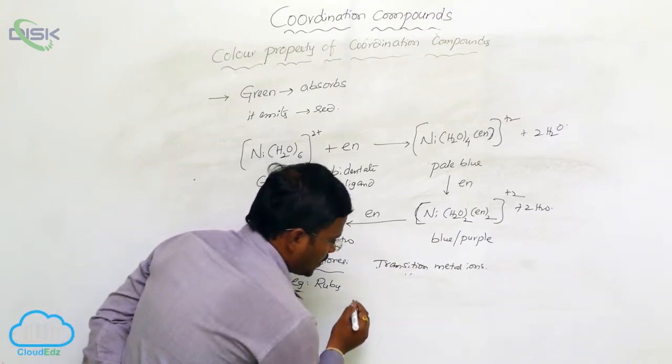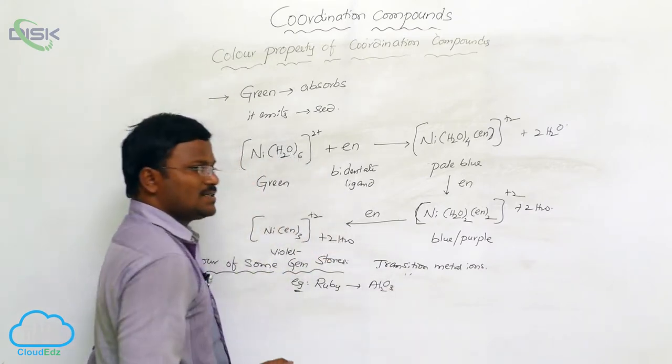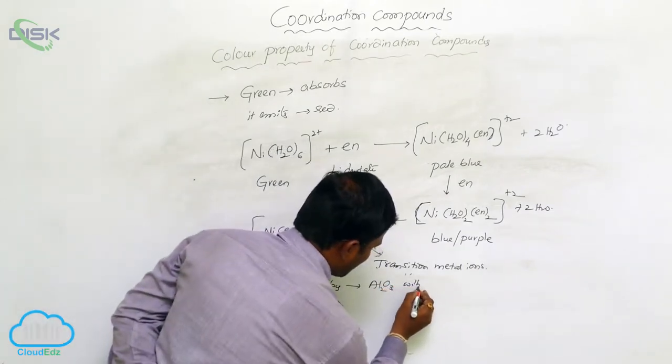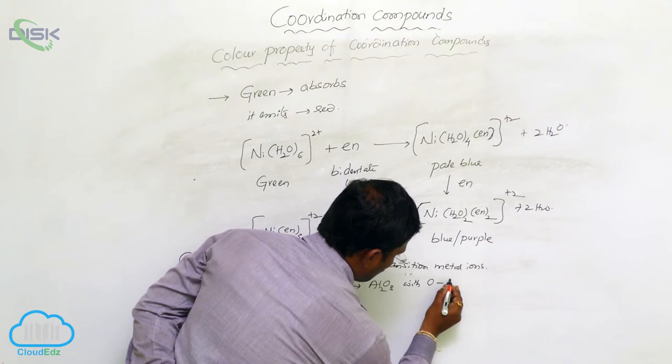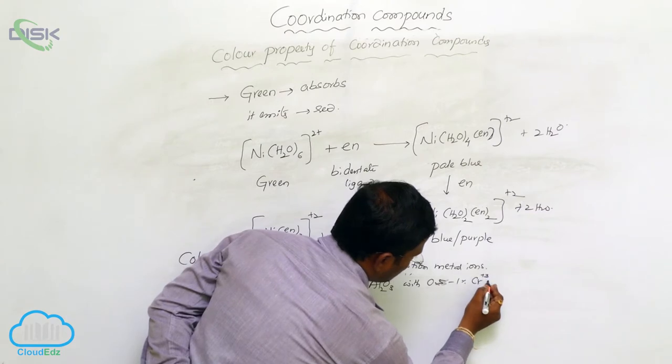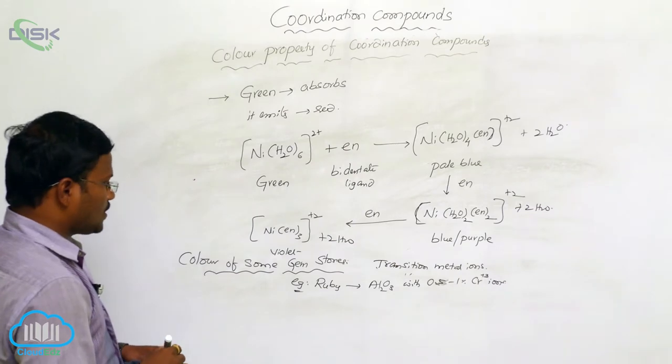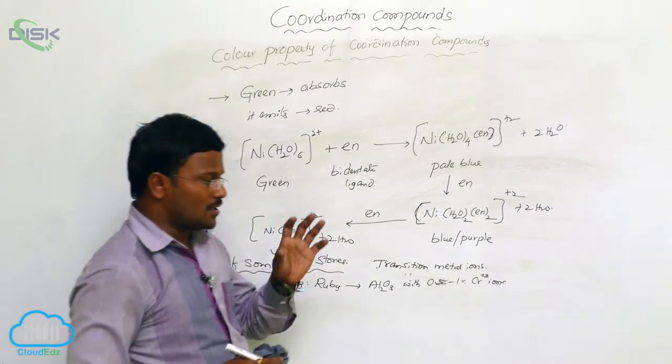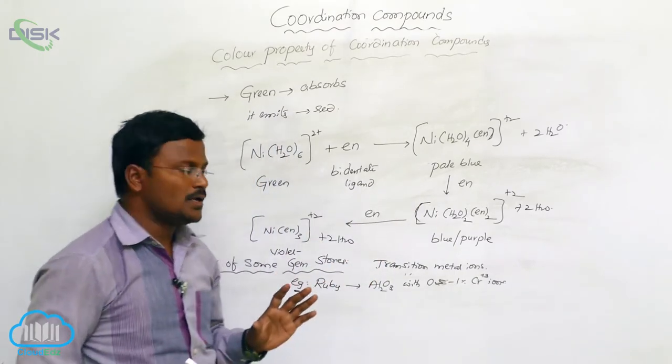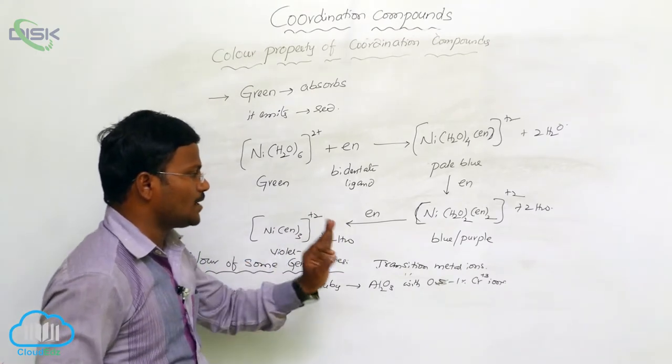Actually, ruby is nothing but Al2O3. Ruby is alumina with chemical composition Al2O3 with 0.5 to 1 percentage of chromium ions. These are the color properties for stones. The stones will have different colors due to presence of transition metal ions. This is the color property of coordination compounds.